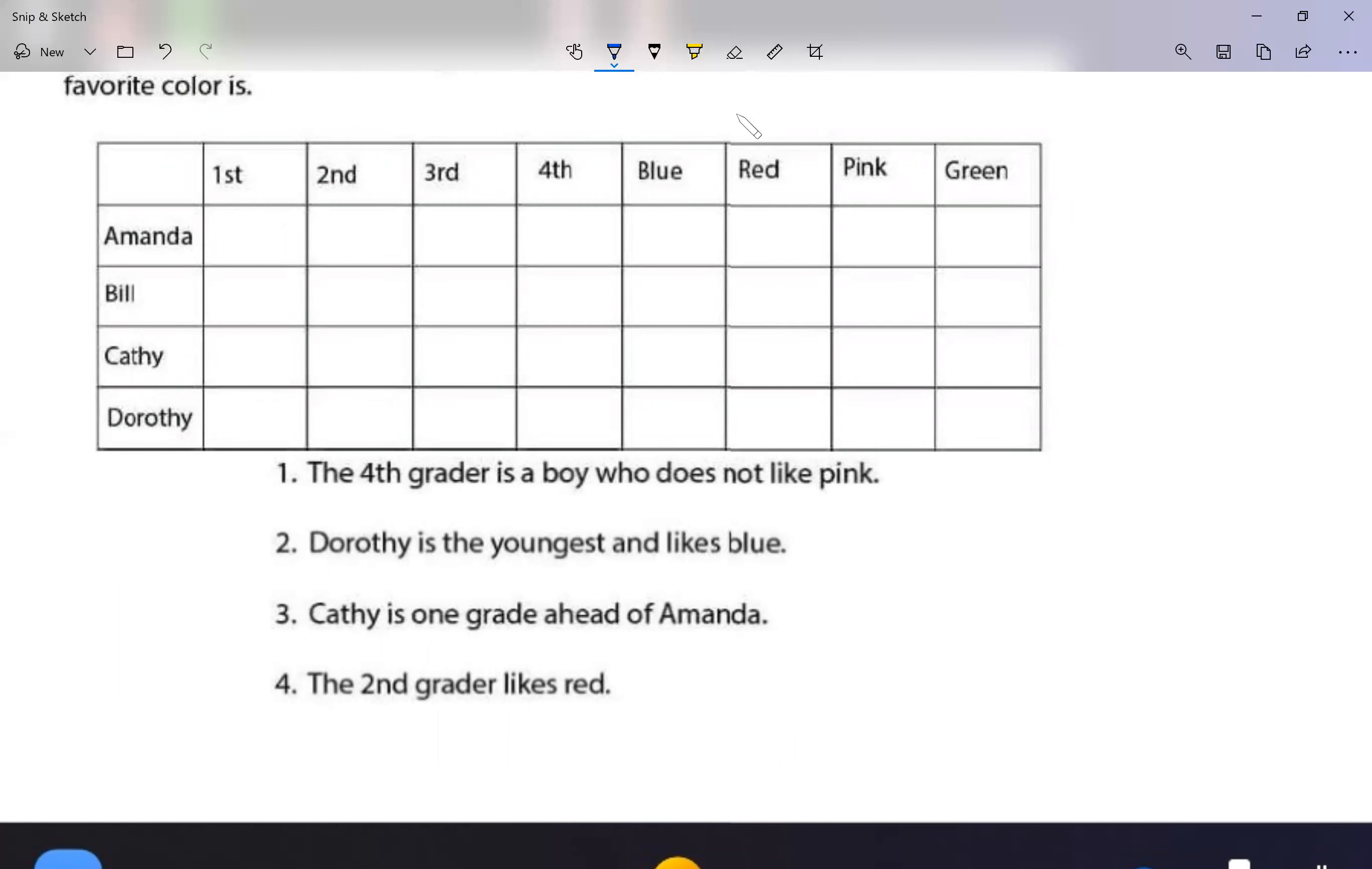Okay, so I see Amanda, Bill, Cathy, and Dorothy. I only have one boy, and it says the fourth grader is a boy. So okay, so I know Bill is the fourth grader who does not like pink. Okay, he could say blue, red, or green - I don't know. So let me read statement two. Dorothy is the youngest and likes blue. She's the youngest, so Dorothy is in first grade. She likes blue, so I know Dorothy's grade level and color. Cathy is one grade ahead of Amanda. You notice Cathy and Amanda, they're one of them's second grader, the other one's the third grader.